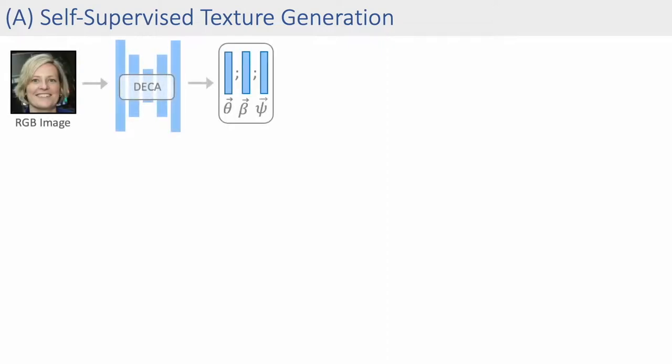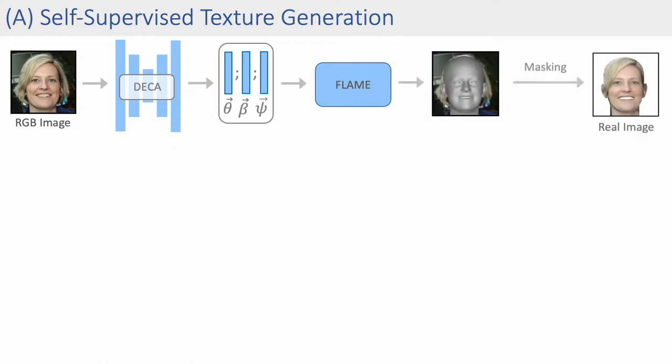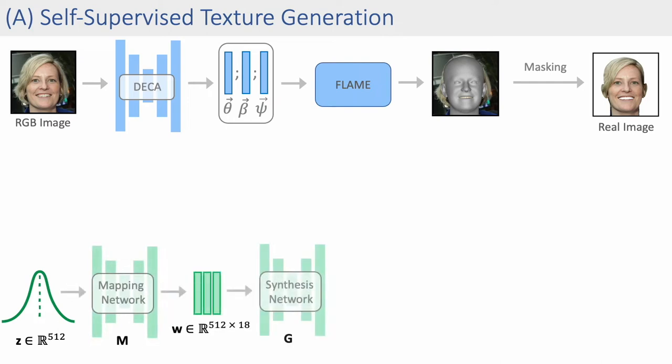We learn texture generation for 3D morphable models in a self-supervised fashion from a collection of RGB images. We use DECA to extract the distribution of 3D face shapes and expressions, as well as the camera poses from the dataset. We then mask out the background and mouth interior to generate real images for our adversarial formulation. In parallel, we sample a latent code from a Gaussian distribution and pass it to our texture generator based on the StyleGAN2 architecture.